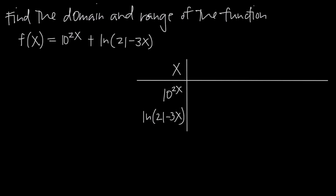So how do we go about finding domain and range? For domain, we're looking for values of x where the function is not defined, and we're staying in the realm of real numbers. When you have a function that includes a natural log, a square root, or a fraction, you want to pay attention. If you have a natural log function, you know that a natural log cannot be defined where the argument inside is less than or equal to 0.